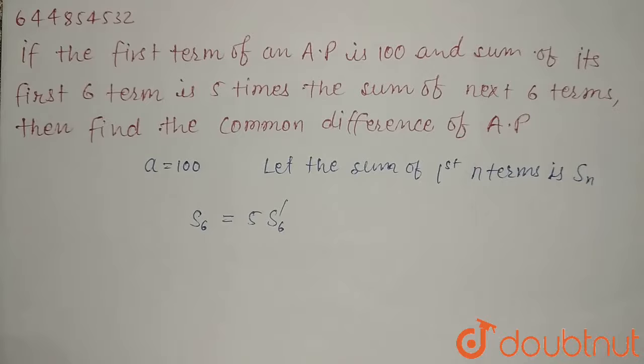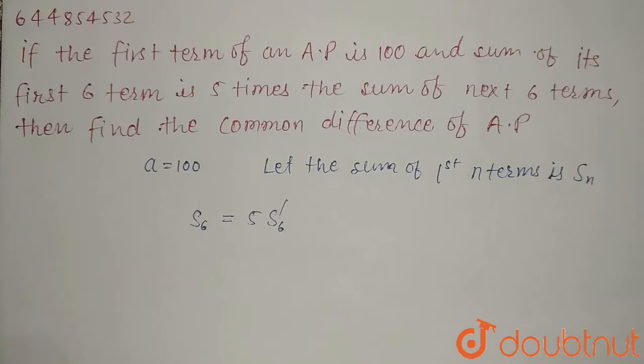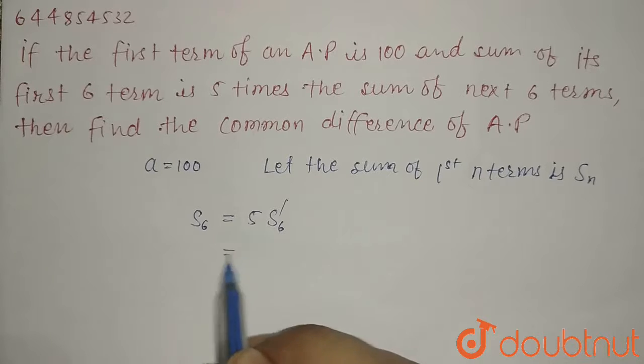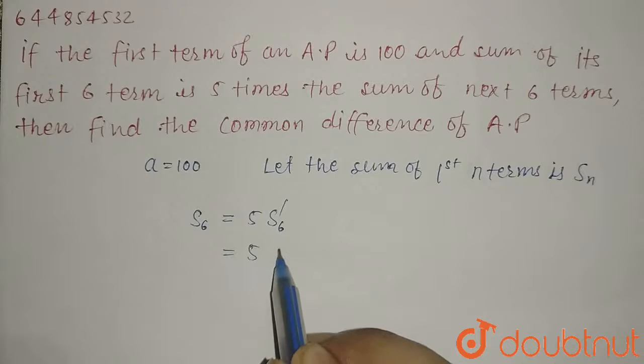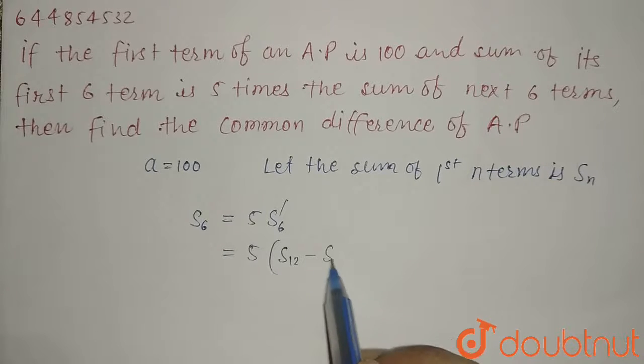The sum of next 6 terms can also be written as the sum of first 12 terms minus the sum of first 6 terms. So we can write this as 5(S_12 - S_6).